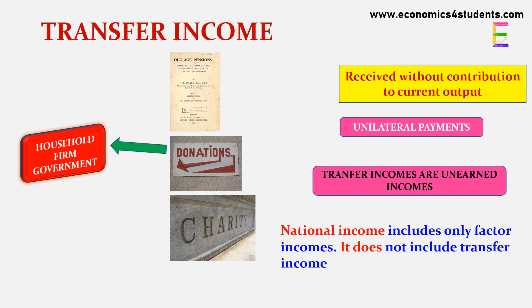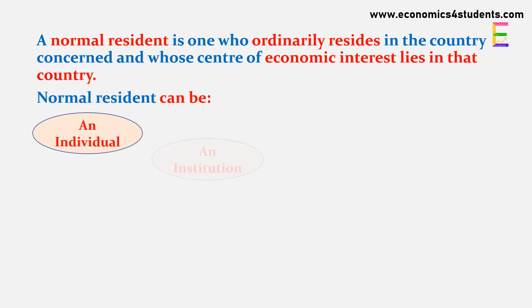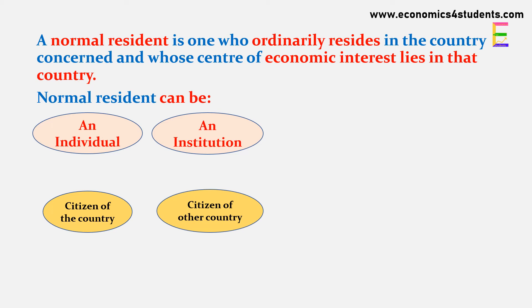Now, who is the normal resident of a country? A normal resident is one who ordinarily resides in the country concerned and whose centre of economic interest lies in that country. A normal resident can be an individual or an institution, and may or may not be a citizen of the country. For example, an Indian living in the USA for more than one year who conducts economic transactions related to production, consumption or investment in that country would be considered a normal resident of that country.